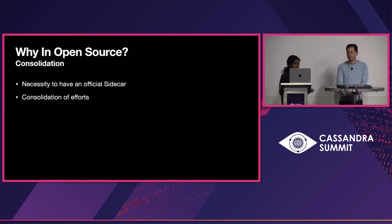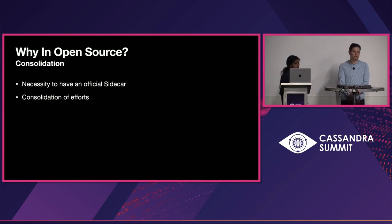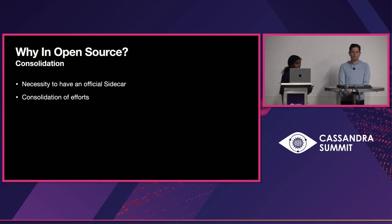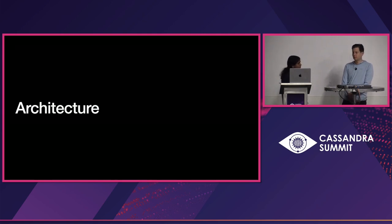The main motivation behind building a Sidecar solution in open source is that, because of the complexity of operating Cassandra, everybody will have their own Sidecar solution in their environment. This effort was to consolidate all that and have a control plane in open source.